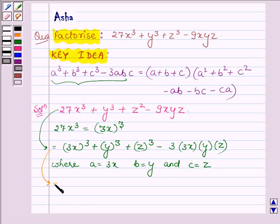It can be further written as a plus b plus c that is 3x plus y plus z and in the next bracket we have a square that is 3x whole square plus b square that is y square plus c square that is z square minus a into b.